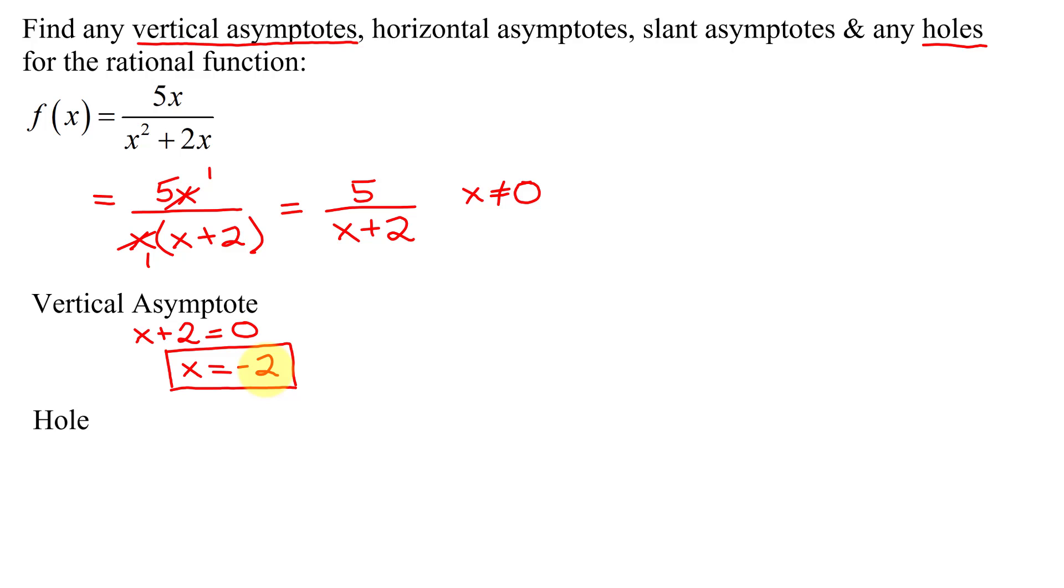Next, holes are found by setting the factor that you reduced between the numerator and the denominator equal to 0. So we get x = 0. Now I need to find the y-coordinate of the hole. Be careful, you do not want to plug in 0 into this expression. You will get 0 divided by 0, which is an indeterminate form.